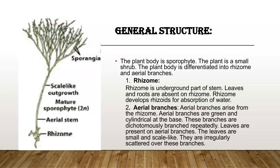General structure: the sporophytic body includes sporangia, scale-like outgrowths or leaves, mature sporophytic body, aerial stem, and rhizome. The plant body is a sporophyte and is a small shrub, differentiated into rhizome and aerial branches. The rhizome is the underground part of the stem; leaves and roots are absent. Rhizome develops rhizoids for absorption of water. Aerial branches arise from the rhizome, are green and cylindrical, and are dichotomously branched. Leaves present on aerial branches are small and scale-like, irregularly scattered.